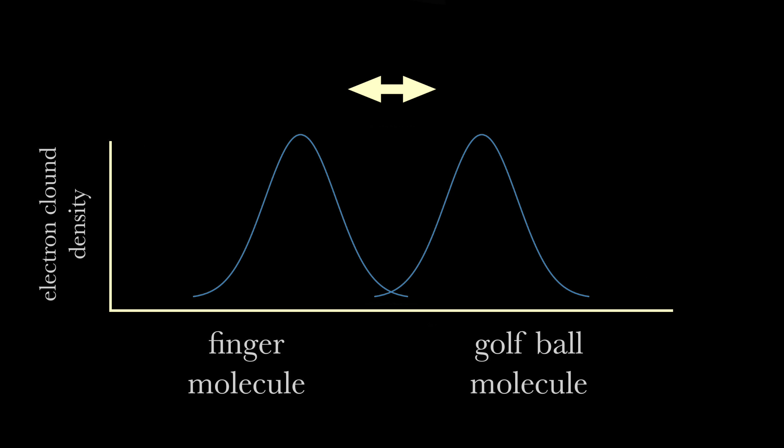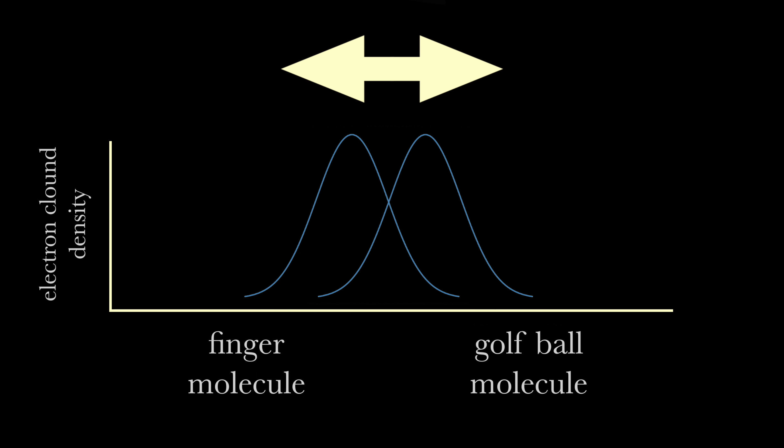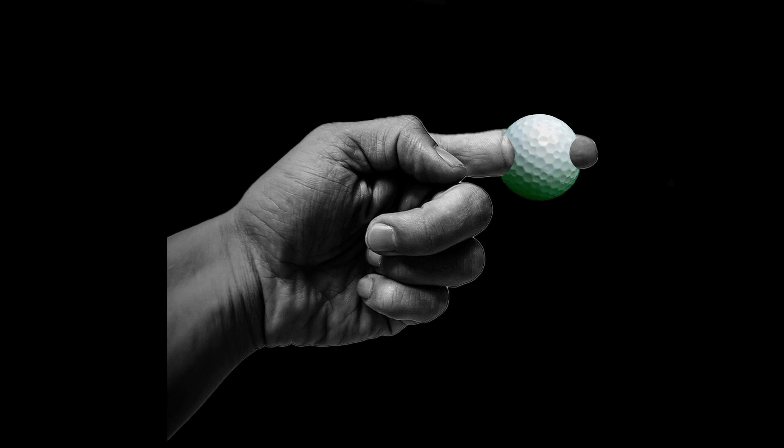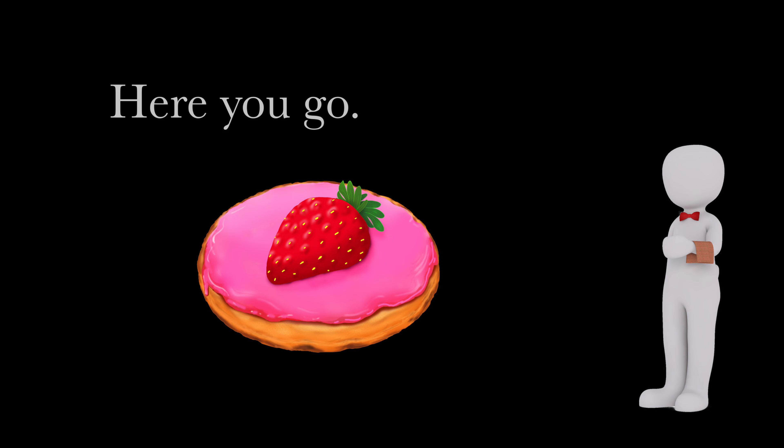Look at a plot of these two electron cloud densities. In the first plot, there is little repulsion. But as they get closer, the force increases. The clouds push away from each other. As your finger gets close to the golf ball, it pushes your finger away. This keeps your finger from going through the golf ball.